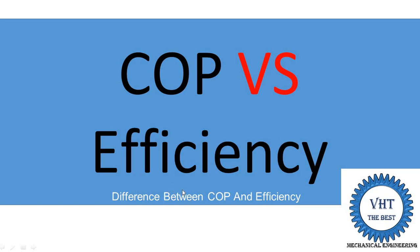In this video I tell you the difference between the COP and efficiency using three to four points. When you study the refrigeration and air conditioning system, you find out the performance and it is called the COP. When you calculate the performance of the IC engine, pump, compressor, and turbine, you find out the efficiency. The COP and efficiency are both output upon input, but why do we use different terms?